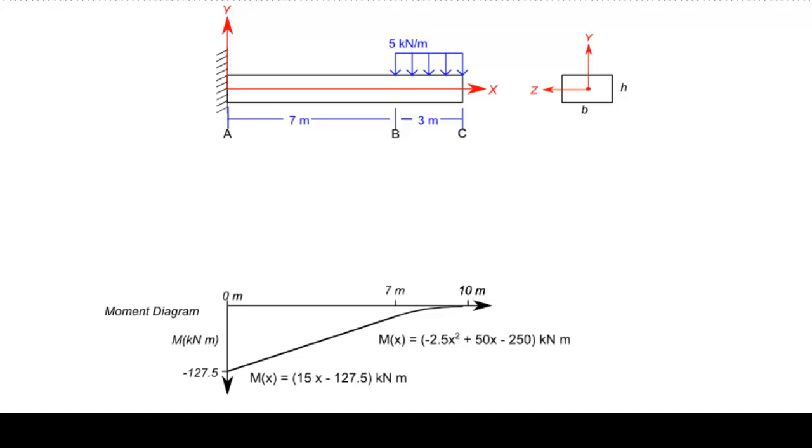Next, the stress at any location inside the beam can be calculated using the flexure formula, which states that the normal stress due to bending in the x-direction equals negative M_z times y (the distance from the neutral axis through the centroid) divided by I_z, the moment of inertia about the z-axis.